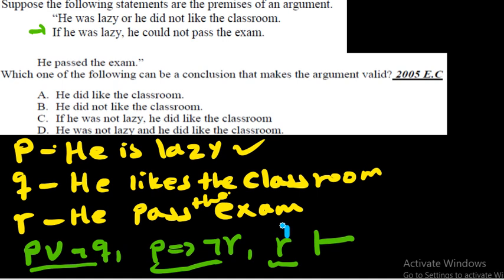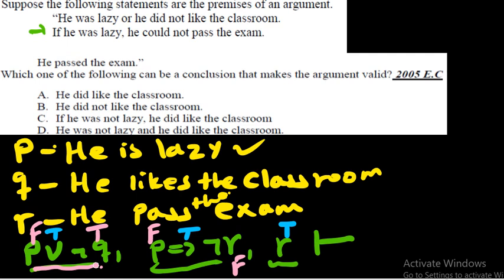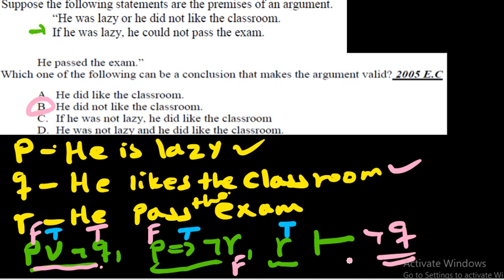Taking all premises as true: r is true, so ¬r is false. For p→¬r (true) with ¬r false, p must be false. With p false, for p∨¬q (true) to hold, ¬q must be true — meaning q is false (he did not like the classroom). The conclusion that makes the argument valid is ¬q, which is choice (b): 'He did not like the classroom.'